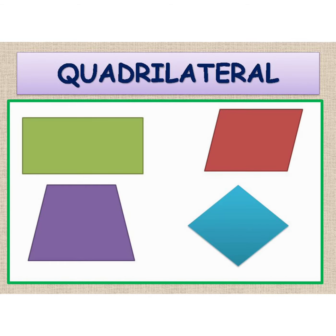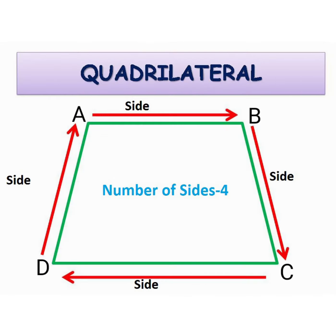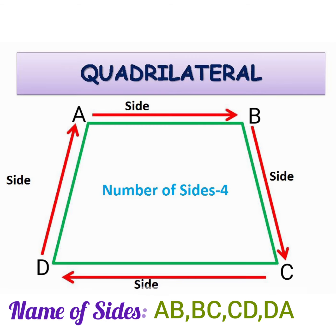These figures are examples of a quadrilateral. The given figure is a quadrilateral and it has four sides, namely AB, BC, CD, and DA.